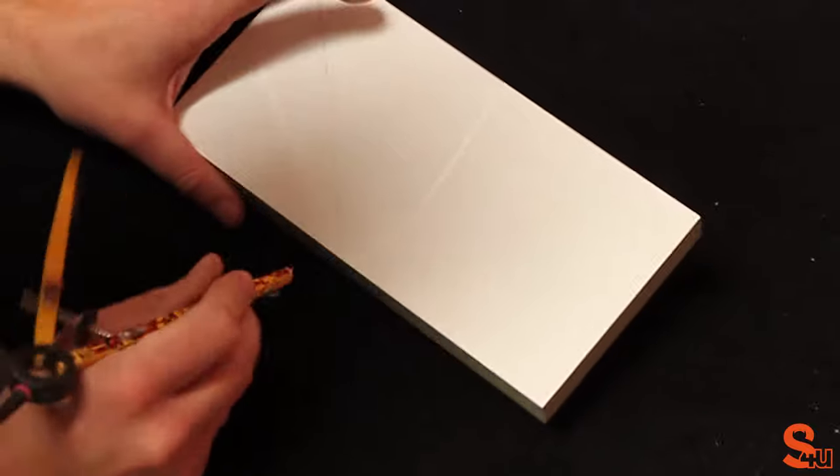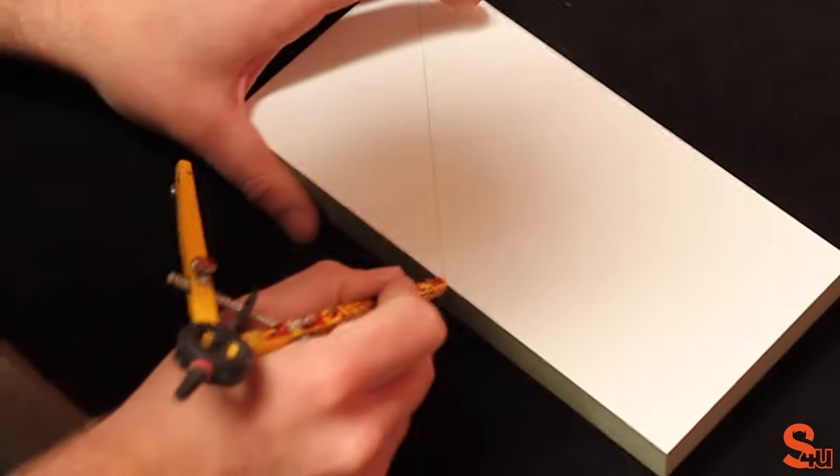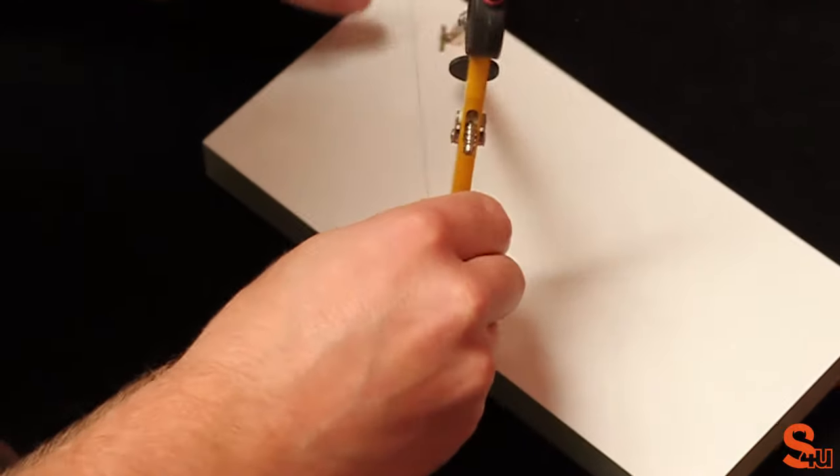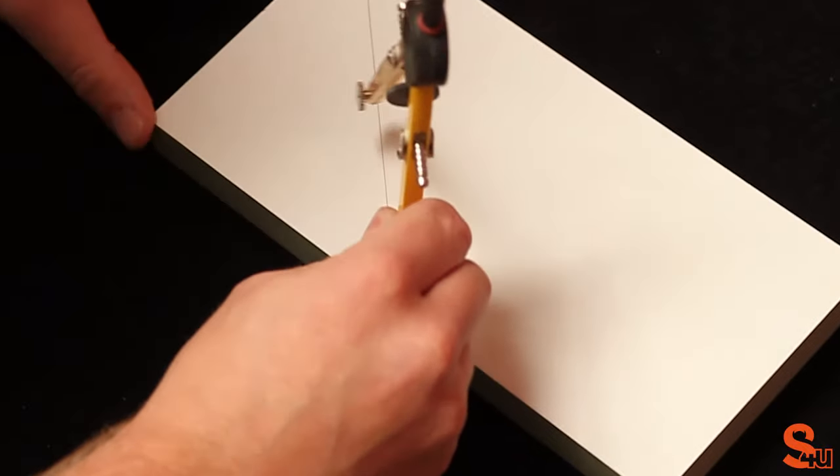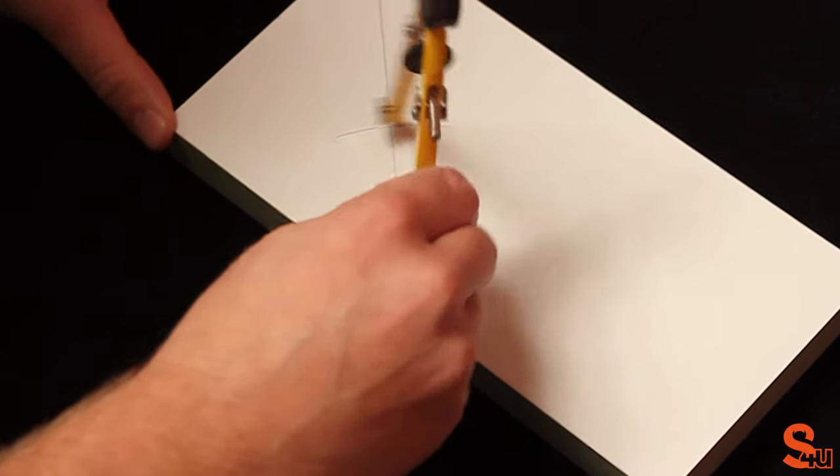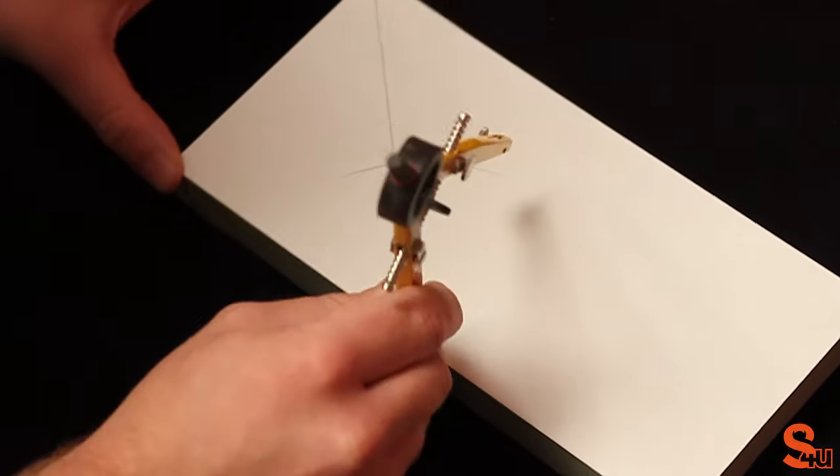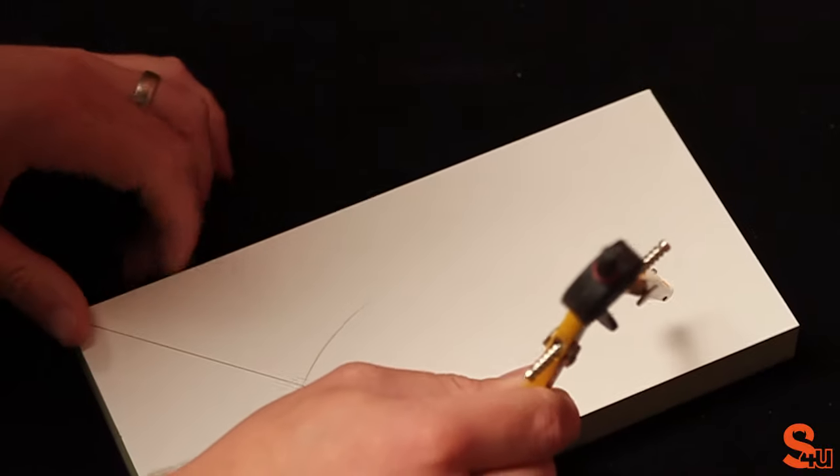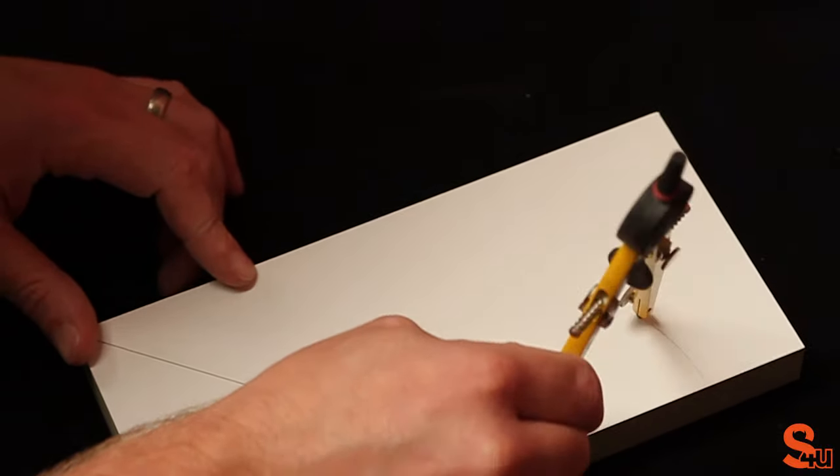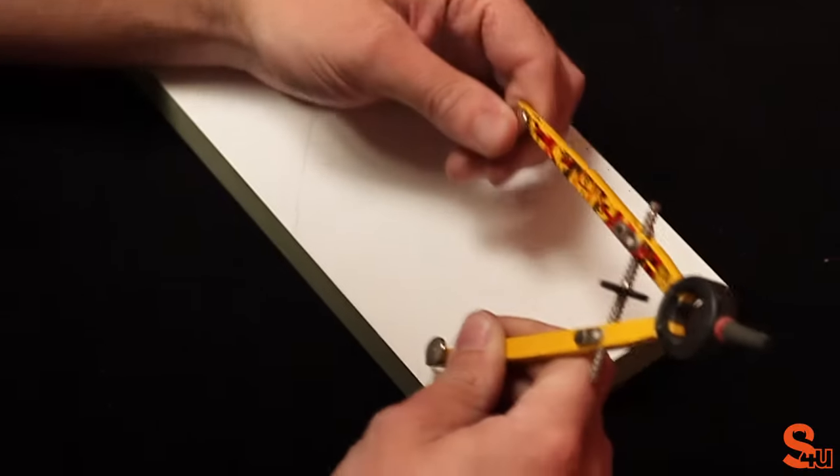Next, grab a compass and mark an arc halfway up the line on both lines. In this case we've used the base of the board as our second line, so we're just going to put a half mark there.